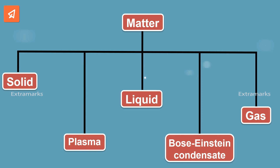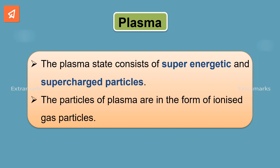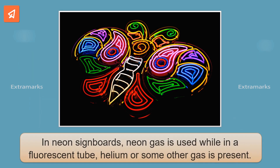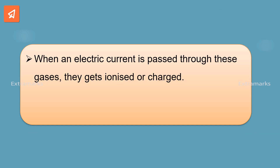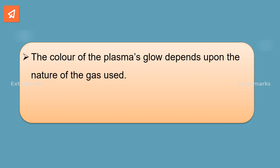Let's discuss the fourth and fifth states of matter one by one. The plasma state consists of super-energetic and supercharged particles. The particles of plasma are in the form of ionized gas particles. In neon signboards, neon gas is used, while in a fluorescent tube, helium or some other gas is present. When an electric current is passed through these gases, the gases get ionized or charged. This charging of the particles of a gas creates a plasma which glows inside the tube or bulb. The color of the plasma's glow depends upon the nature of the gas used.